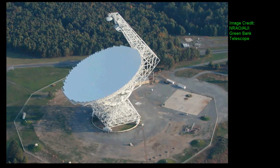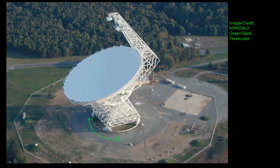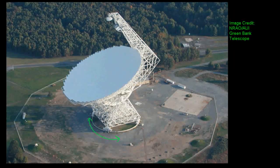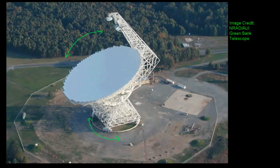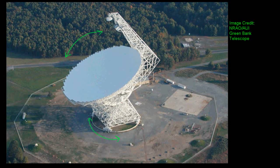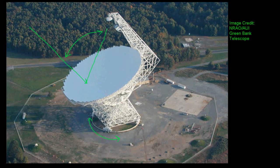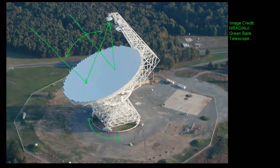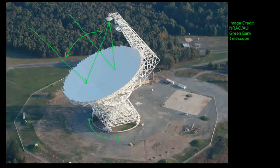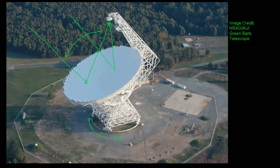This entire structure can rotate 360 degrees on this track that you see down here. And the entire thing can also be tilted, allowing us to point it anywhere in the sky. As our radio waves come in and hit the telescope, they're all reflected back to this same focal point. And that is where we have our receiver, our antenna, which allows us to measure these radio waves.